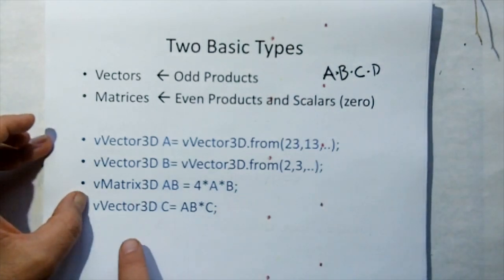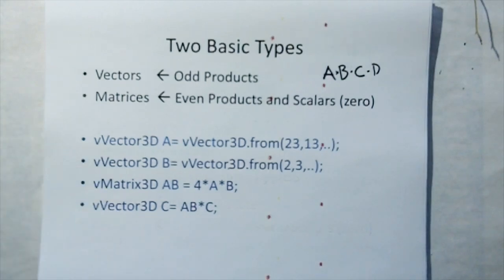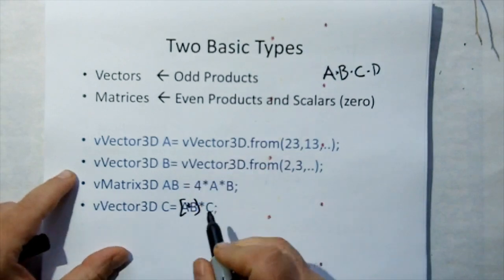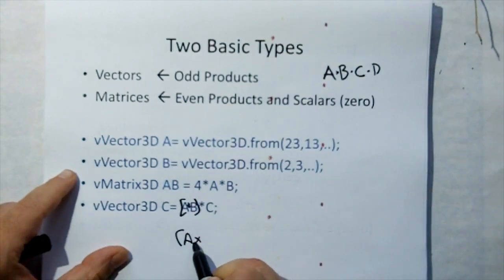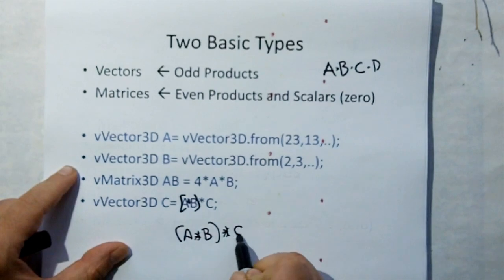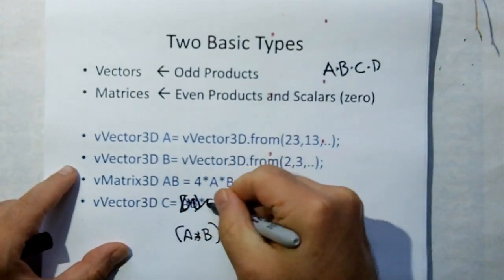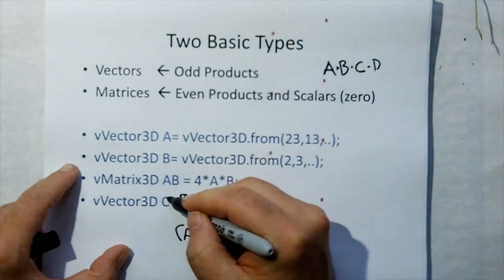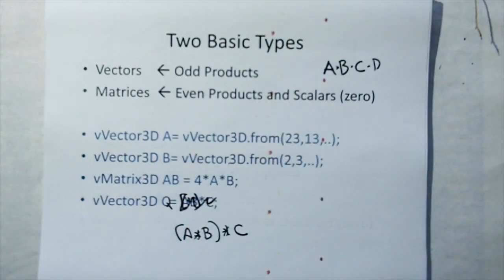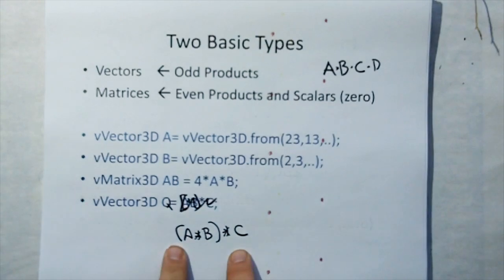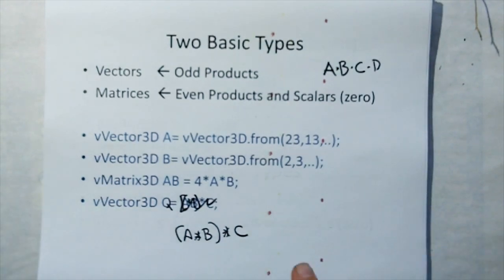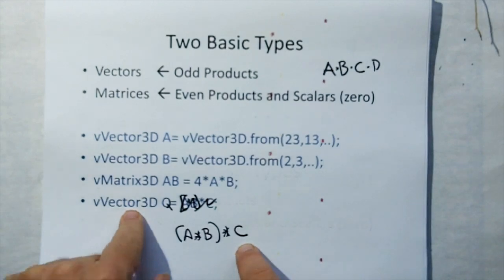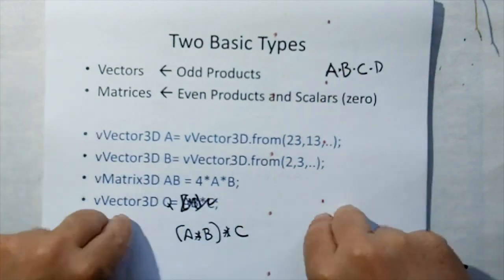For a triple product A star B star C, you'd create a vector container for the result since a triple product ends up as a vector. You multiply A times B, put them in parentheses because order of operation matters, then multiply by C — the result Q is a vector. That's the basic operations overview.